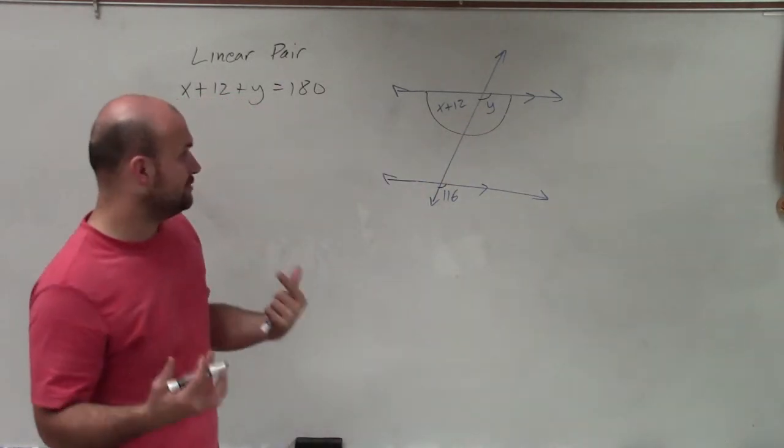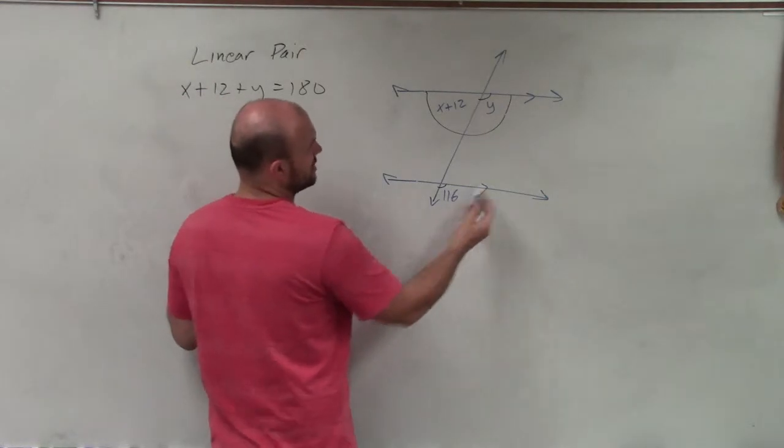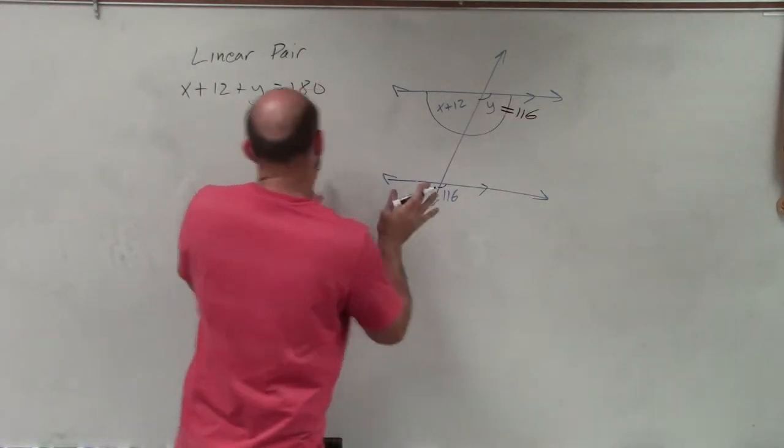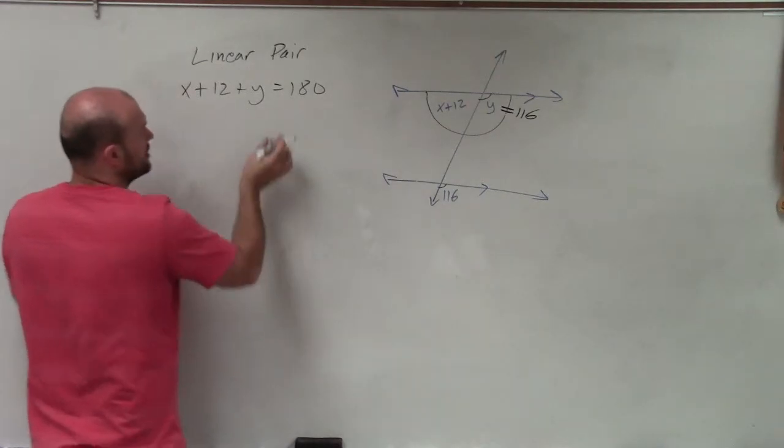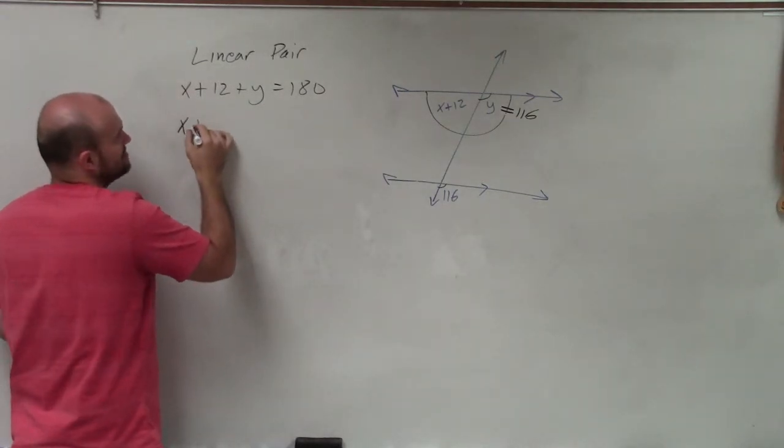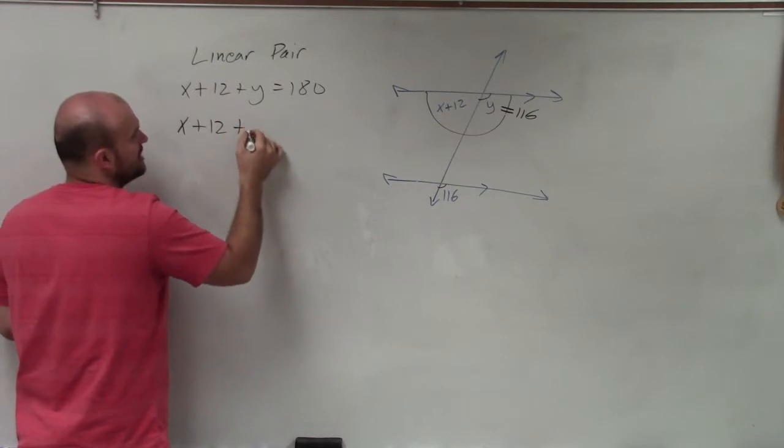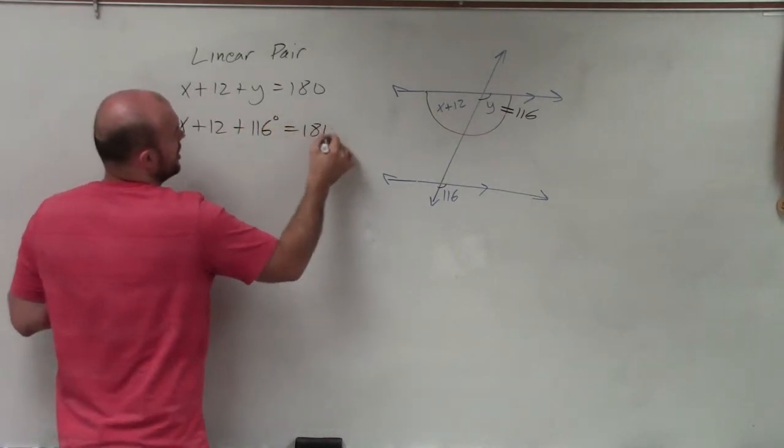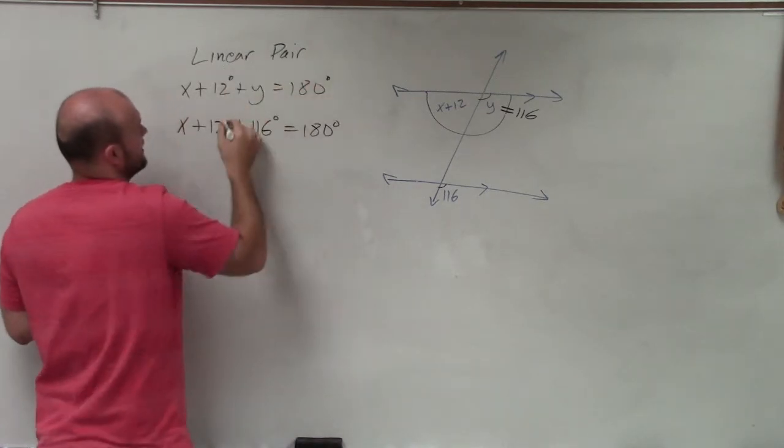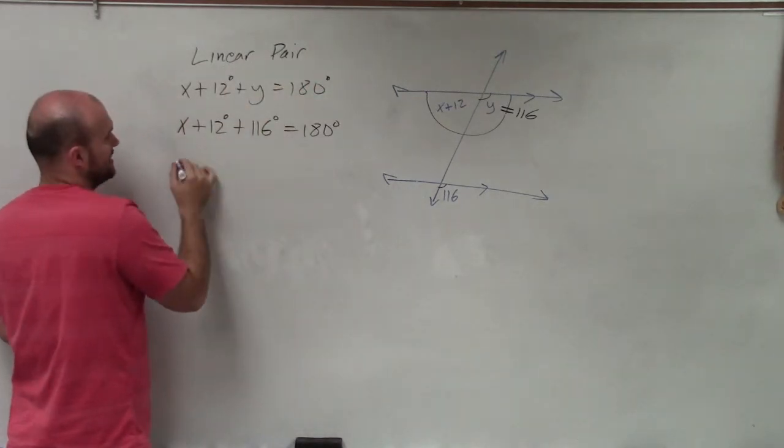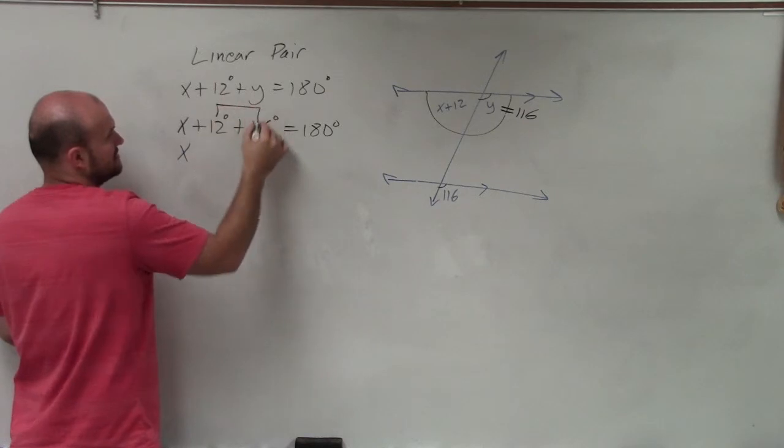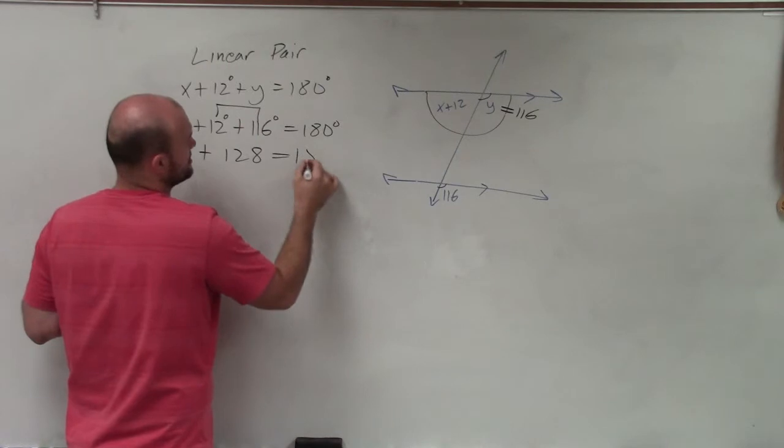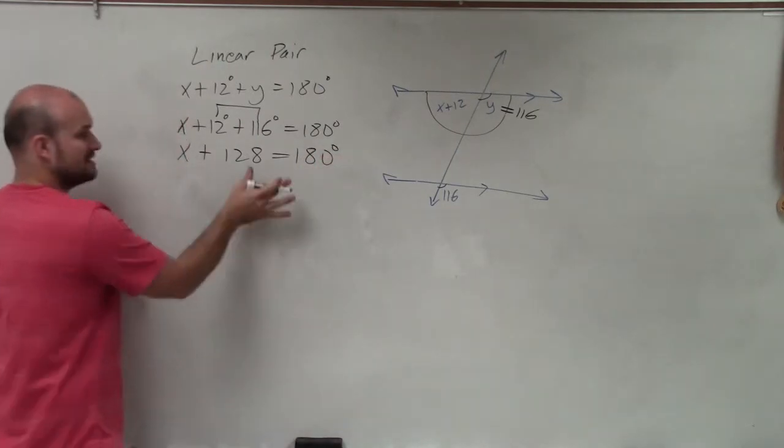And remember, corresponding angles are equal in measure. So therefore, if this is 116, I can say this is 116. So now, since I know y is equal to 116, I can plug that value in from here. So I can say x + 12 + 116° = 180°. I guess I could add some degrees here. Then I can combine these two terms, so I can say x, since these are both numbers, x + 128 = 180°.